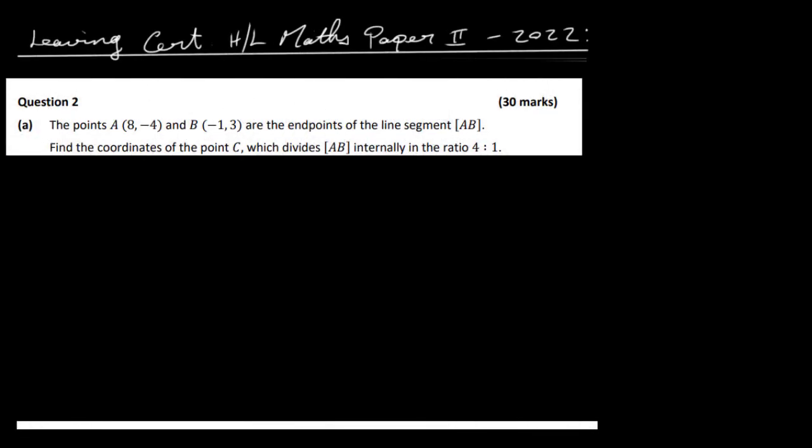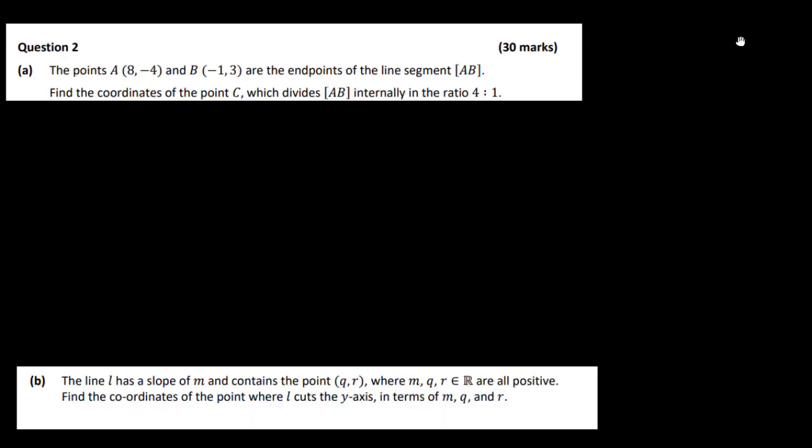Okay, so let's have a look at the Leaving Cert High Level Maths Paper 2 for 2022 and question 2, Part A. The points A (8, -4) and B (-1, 3) are the endpoints of the line segment AB. Find the coordinates of the point C which divides the line segment AB internally in the ratio of 4 to 1.